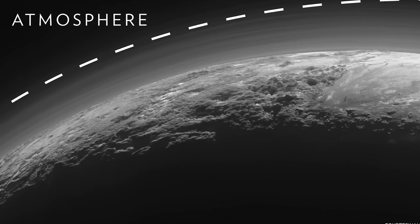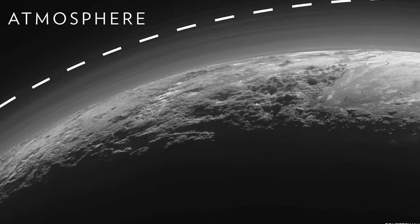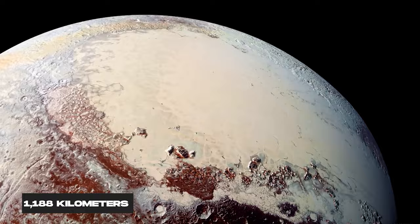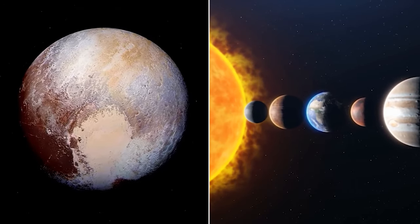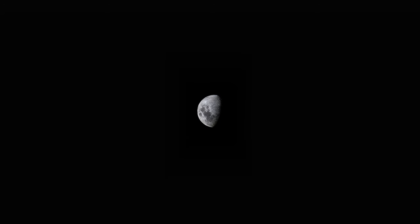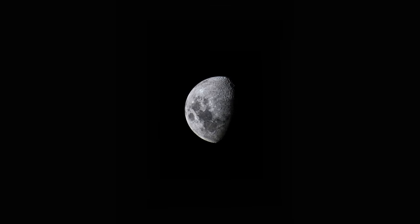Pluto's modest dimensions are evident in its radius, measuring a mere 1,188 kilometers, rendering it conspicuously smaller not only than all the planets in our solar system but also some of their moons, including our own moon.